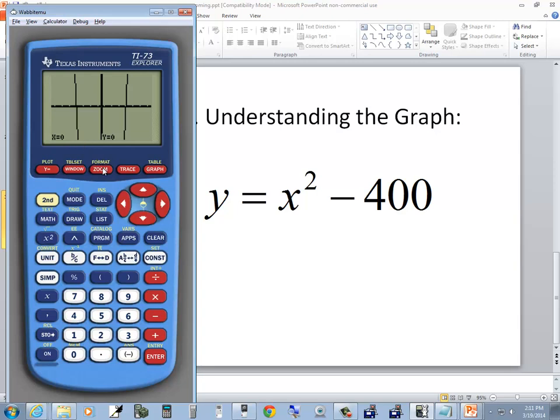At this point, I could change to a different zoom. I could choose zoom and choose Z box. Let's say I'm just interested in the x intercepts, where my graph is crossing the x axis. I'll move it right here and press enter one time.